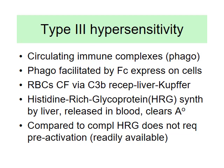Let's talk about type 3 hypersensitivity. Comparing type 2 and type 3: in type 2, the damage was caused when the antigen was fixed — whether on red blood cells, T cells, or acetylcholine receptors at the neuromuscular junction. In type 3, most of the time you have circulating immune complexes rather than fixed antigens.